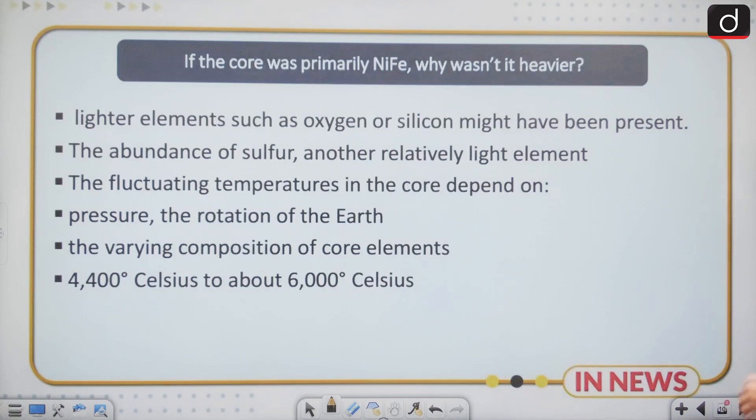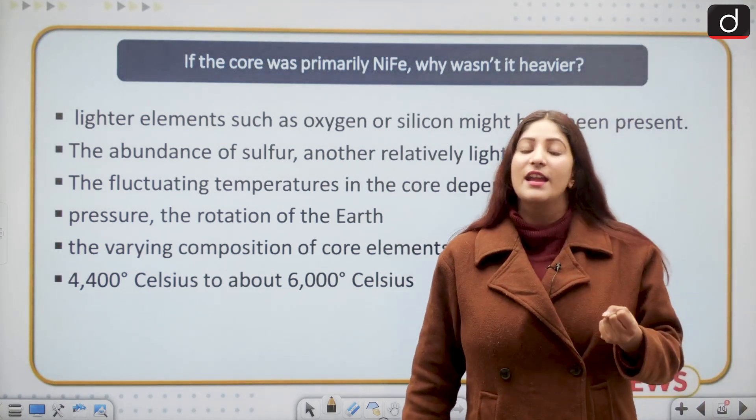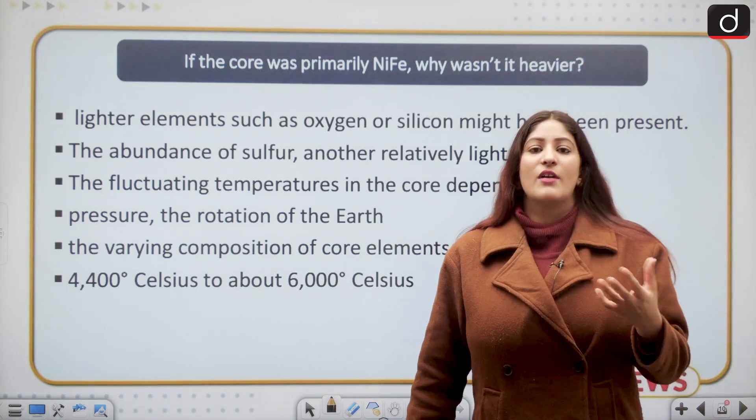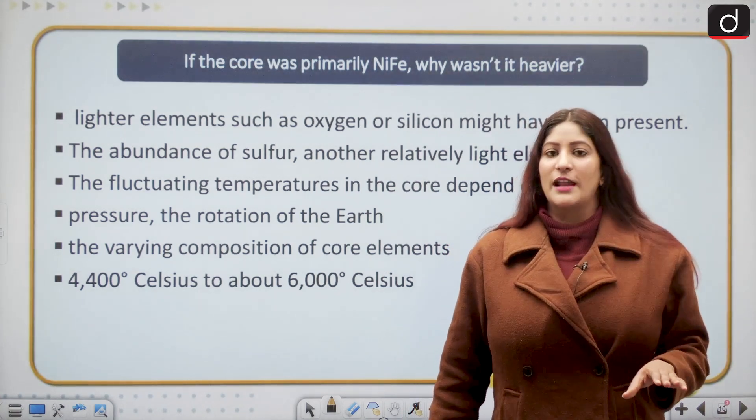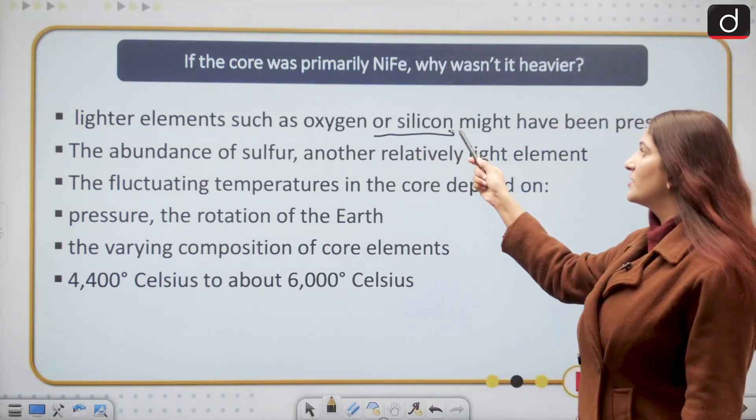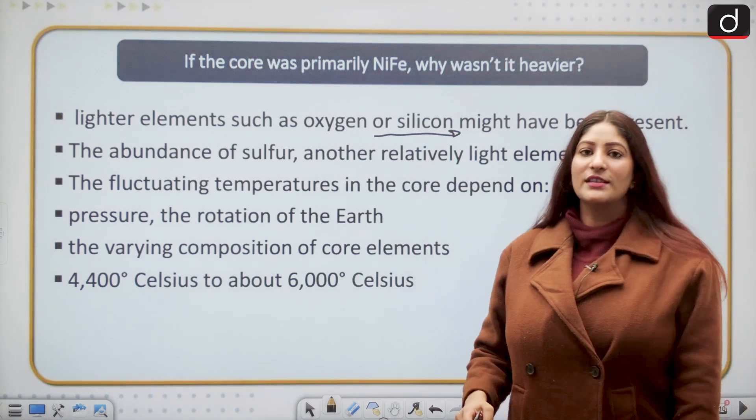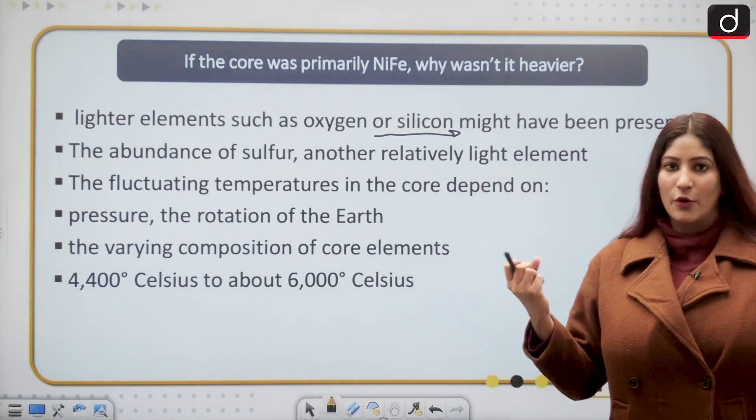It can be said that the lighter elements such as sulfur did not make the core as heavy as nickel and iron would. Iron is heavier in nature, but because of the presence of sulfur in such an abundant amount, along with elements such as oxygen and silicon, the relatively lighter materials have made the core lighter in nature.